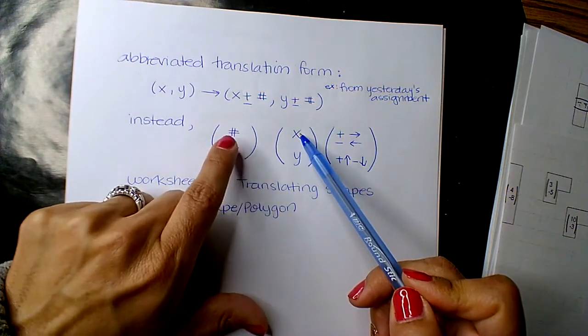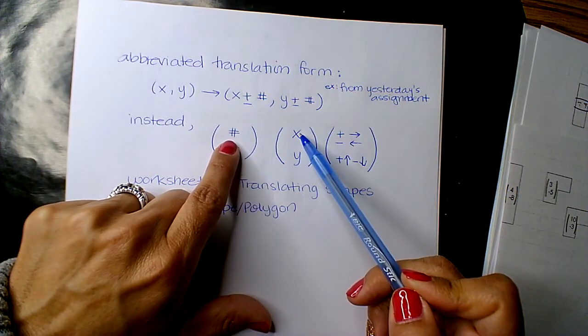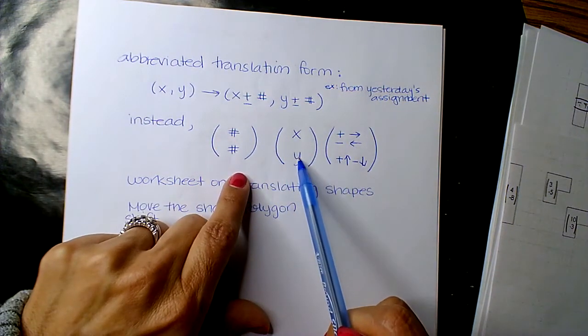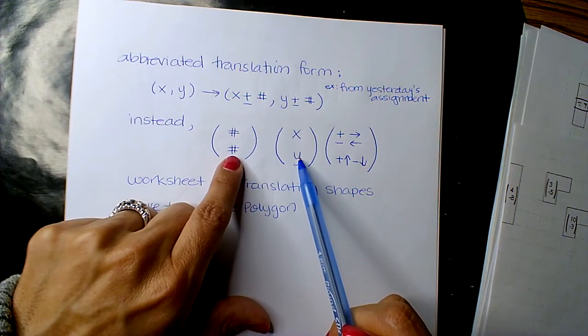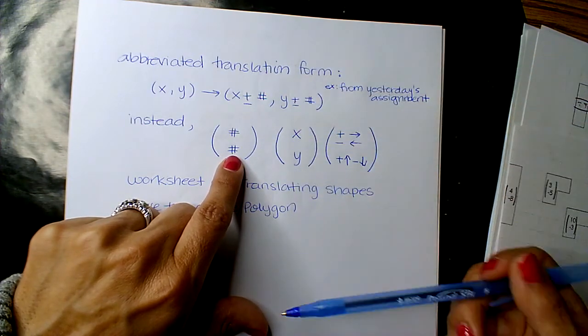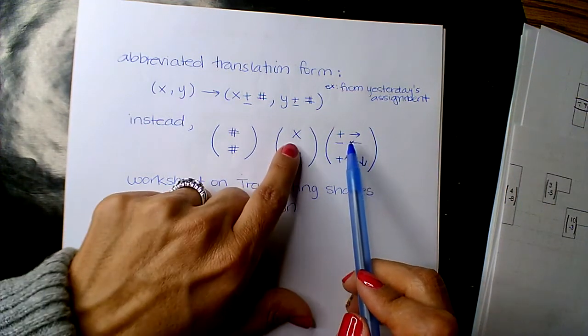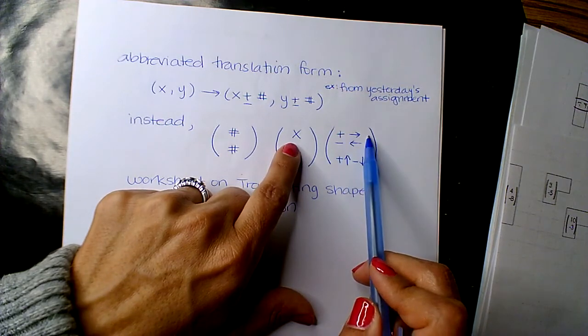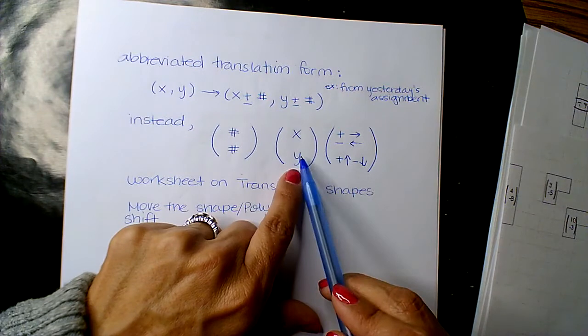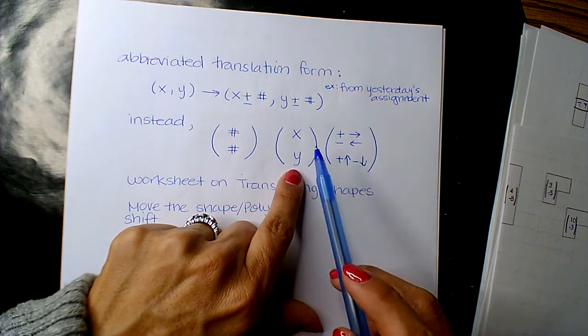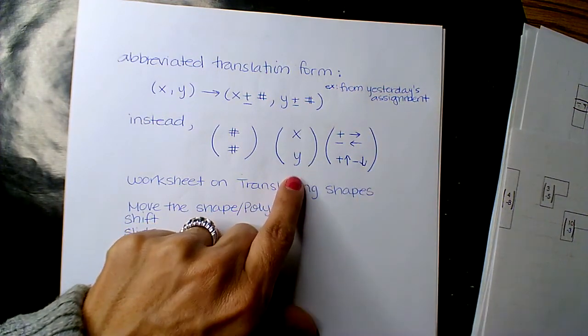The top number represents the x movement for the x's. The second number, the bottom number, is the value for the y shift. On the y-axis, you go up and down. If the top number is positive, you shift to the right. If it's negative, you shift to the left. For the bottom number, if it's positive, you shift up. If it's negative, you shift down.